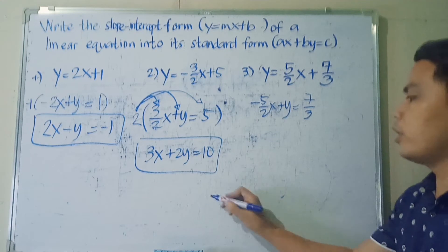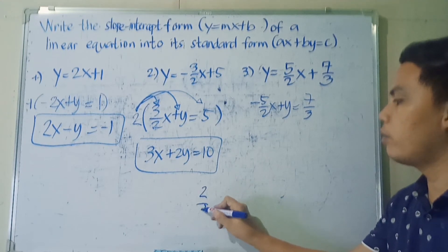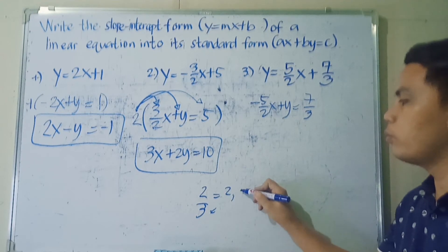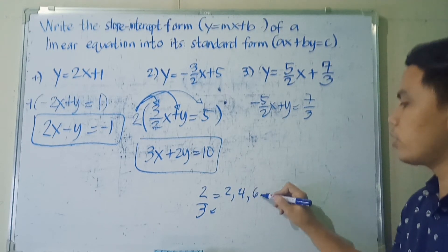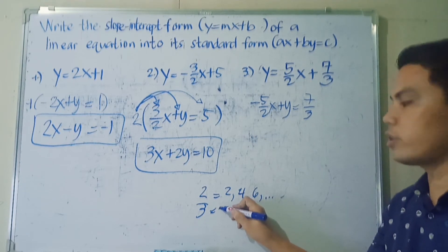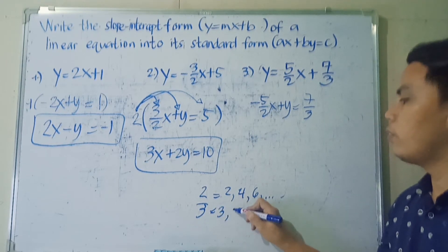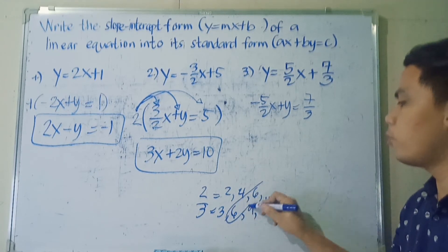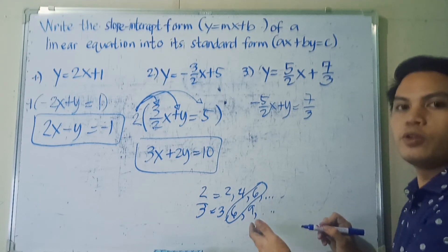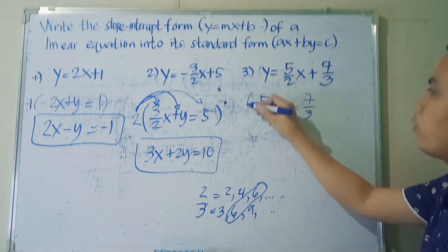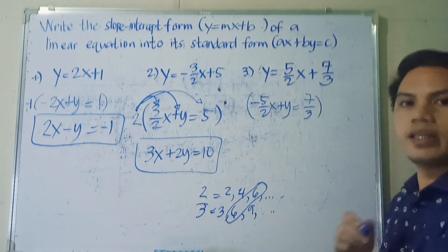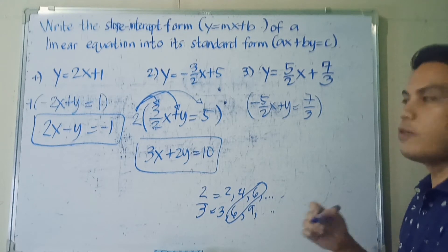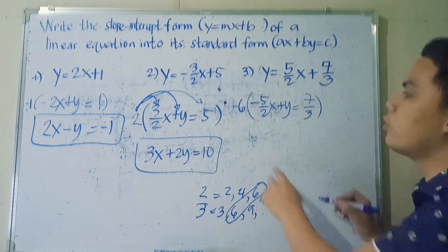To find the LCM of 2 and 3, we do skip counting: multiples of 2 are 2, 4, 6, 8...; multiples of 3 are 3, 6, 9... The first common multiple is 6, so the LCM is 6. But this time, we're going to multiply the whole equation by negative 6, because if we use positive 6, the first term will still be negative.